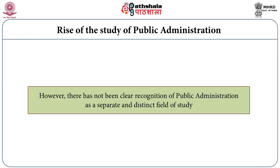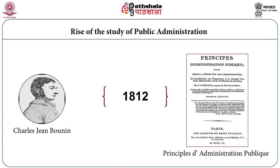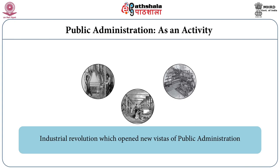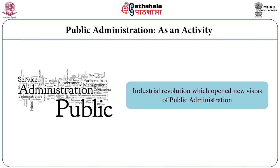However, there had not been formal recognition for the discipline of public administration for so long. It was only in 1812 that a book published by Charles Jean Bonin, titled Principles of Public Administration, can be considered the beginning of public administration as a discipline. The industrial revolution opened new vistas for public administration, ultimately leading to the study of its theoretical aspects.